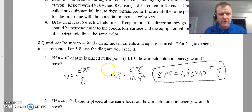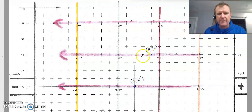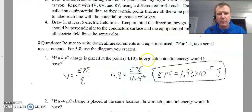The first question: 4 microcoulomb charge placed at the point 14,10, how much potential energy would it have? I had to interpolate the data given the map here, but during the lab I wanted you guys to actually measure it. So the point 14,10 here, I looked at this, it's between 4 and 6, so I estimated that was 4.8 volts. I'm using V equals EPE over Q. Remember, electric potential is the potential energy per charge. So charge is 4 microcoulombs, so I just solved for the energy there, 1.92 times 10^-5 joules.